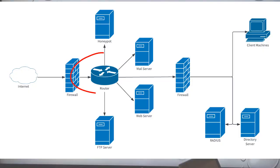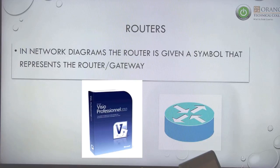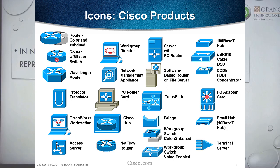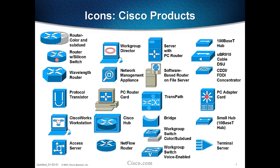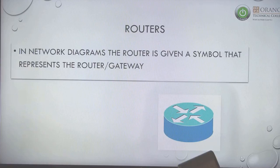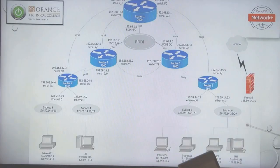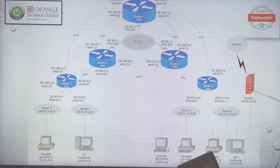When you look at a network diagram with a router in it, there's a specific symbol used. There are two players that determine network device symbols: Microsoft's Visio and Cisco. These two really rule the symbol world. When you see that router symbol in a network diagram, you must start getting comfortable recognizing it. We also call a router the default gateway.